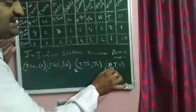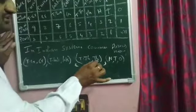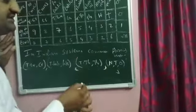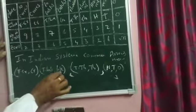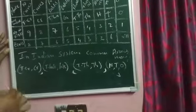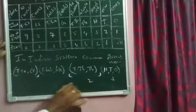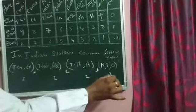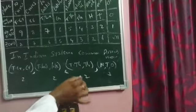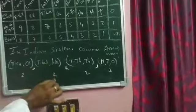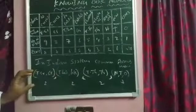The arrangement is: ones, tens, hundreds — then first comma — then thousands and ten thousands — then second comma — then lakhs and ten lakhs — then third comma — then crores and ten crores. So the pattern is three digits, then two digits, two digits, two digits. We take three, two, two to arrange commas in the Indian system.